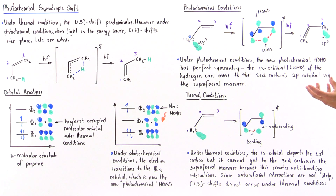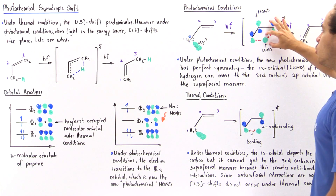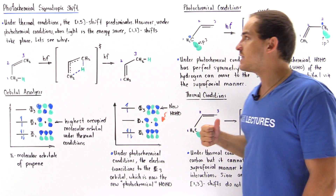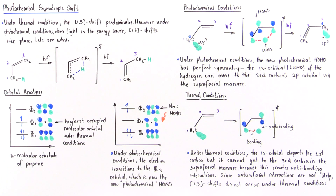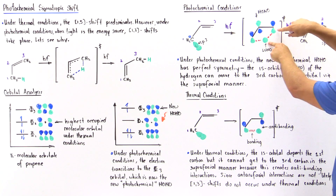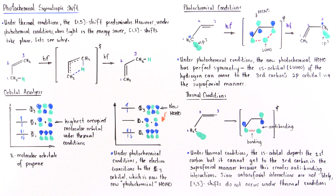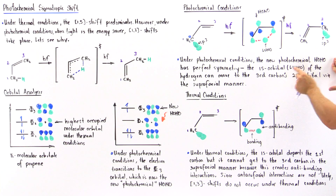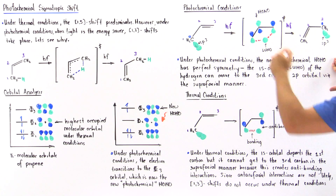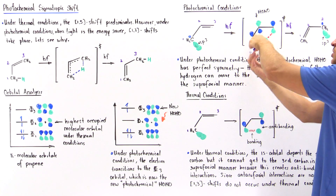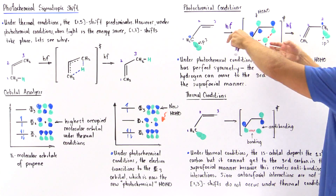We see that this suprafacial interaction — in which our LUMO basically detaches from the bottom and reattaches from the bottom on the opposite side — can only take place under photochemical conditions, because only under photochemical conditions do we have this perfect symmetry: green and green, green and green. Under photochemical conditions, the photochemical HOMO phi 3 orbital has perfect symmetry. The 1s orbital, the LUMO of the hydrogen, can move directly to the third carbon's 2p orbital via a suprafacial manner — meaning from the bottom of this slope to the bottom of this slope — moving a minimal distance.